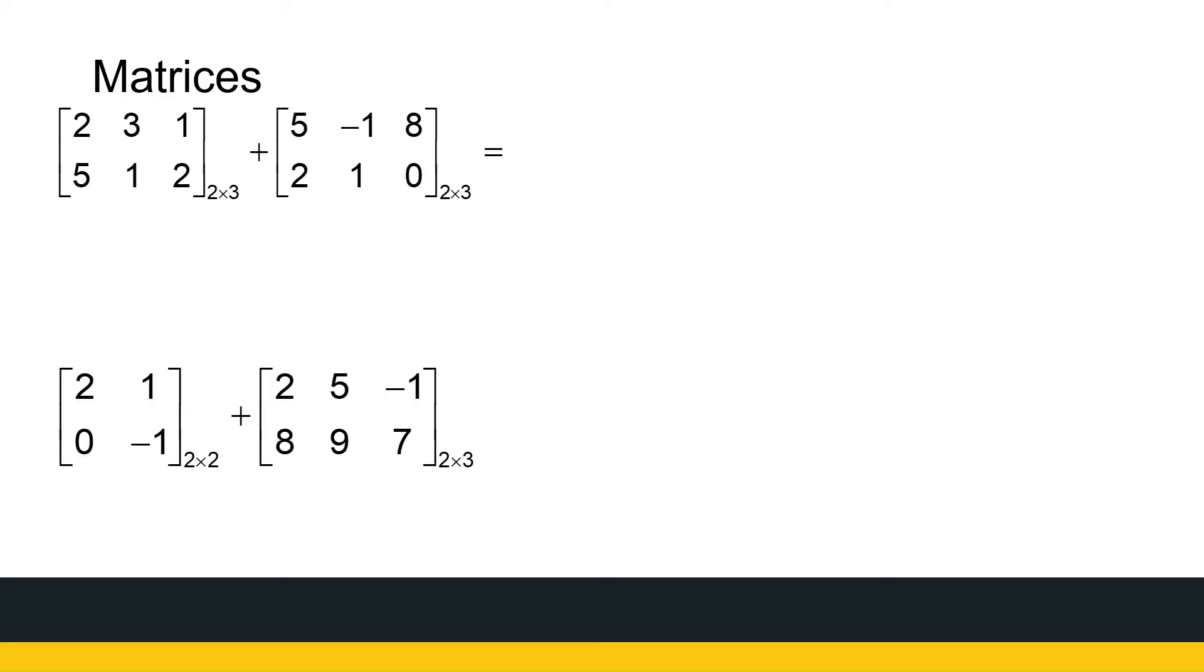Yeah, I've got, in the first example, I've got two 2 by 3 matrices. To add them, we simply add the corresponding entries. So for the first one, 2 plus 5, that gives me a 7. 3 plus minus 1, which gives me a 2. 1 plus 8 gives me 9. 5 plus 2 gives me 7. 1 plus 1 gives me 2. And 2 plus 0 gives me 2. So that is the sum of the two matrices. They have to be the same size, then I can add them.